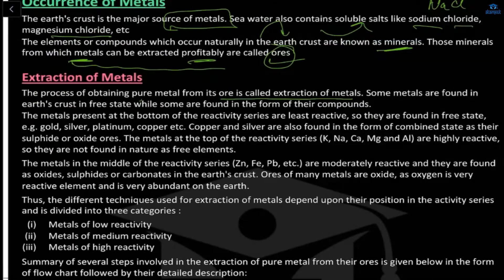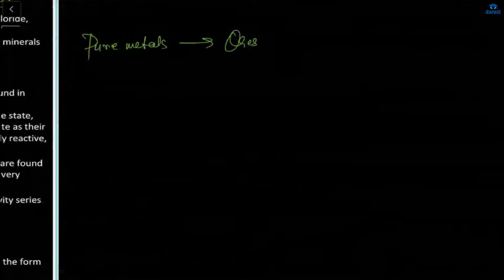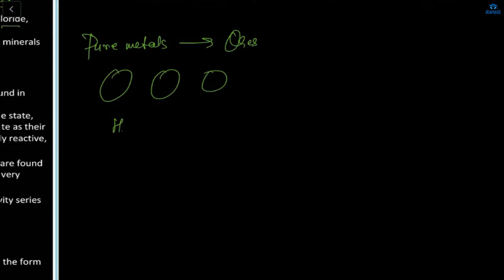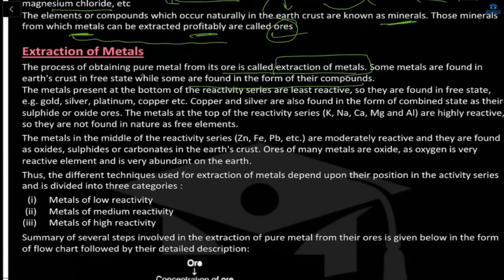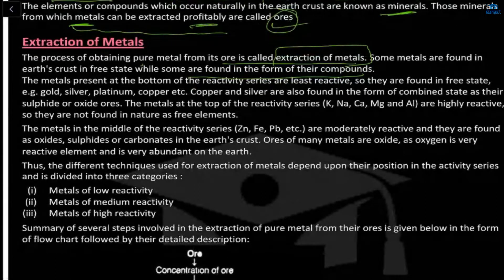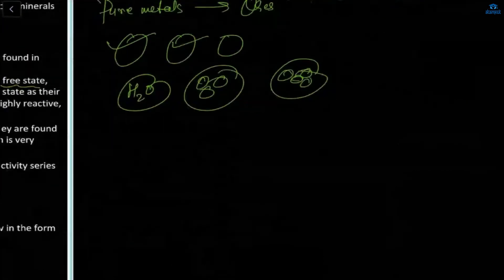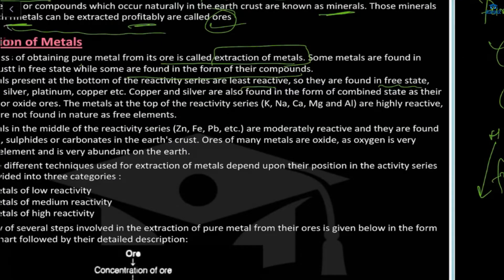Some metals are found in the earth's crust in the free state while others are found in the form of compounds. Free state means a single element; compounds means like H2O or different mixtures. The metals at the bottom of the reactivity series are least reactive, so they are found in the free state.